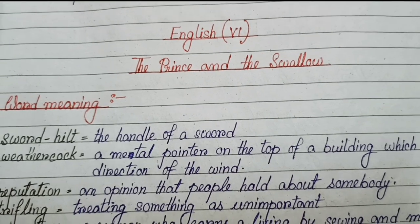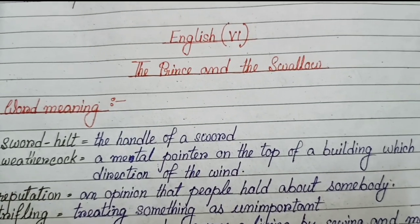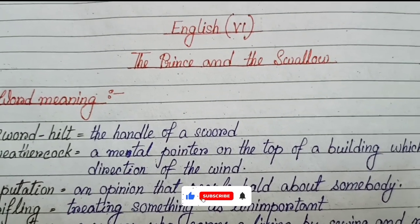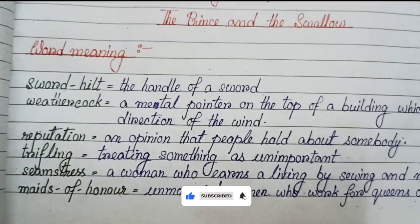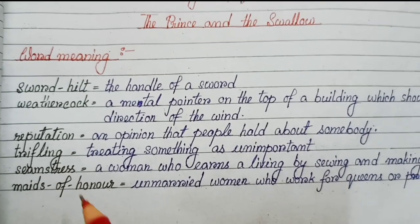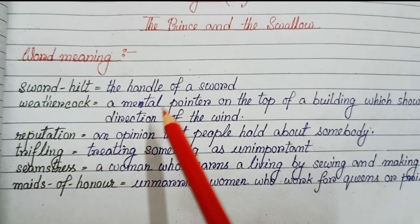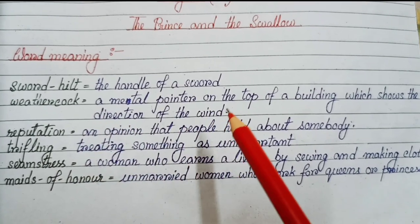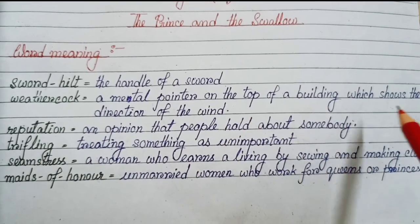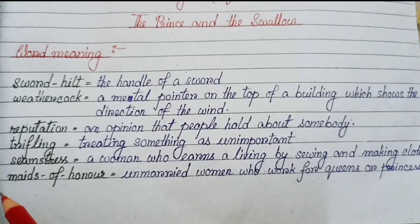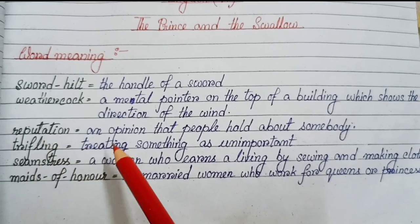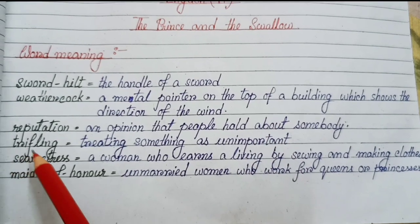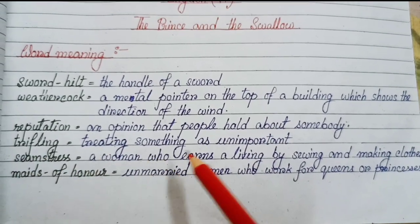Hello students. Today in our English class we will do the exercise from the book 'The Prince and the Swallow'. Let's start. Word meanings: sword hilt - the handle of a sword. Weather cock - a metal pointer on the top of a building which shows the direction of the wind. Reputation - an opinion that people hold about somebody.